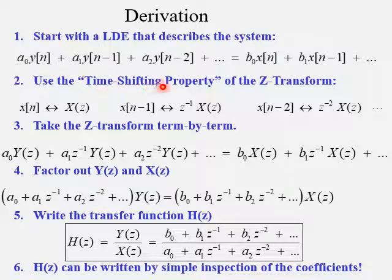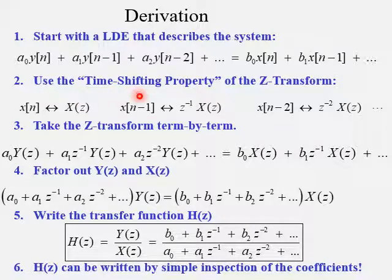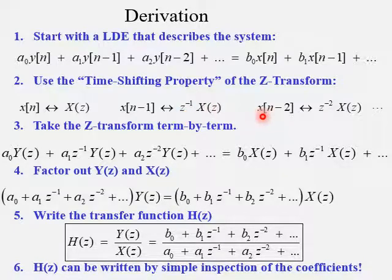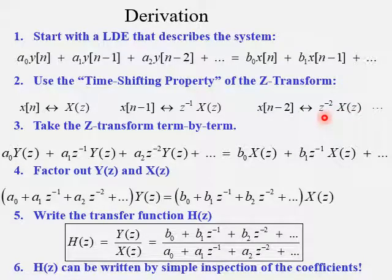What we're going to do is use the time-shifting property of the z-transform. When we have x of n and take the z-transform, we get X of z. Now, x of n minus 1, which means it's been shifted or delayed by 1, results in the same transform X of z but we pick up a factor of z to the minus 1. Likewise, x of n minus 2, delayed by 2, gives X of z times z to the minus 2. This pattern repeats for higher amounts of delay.